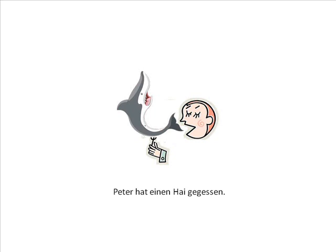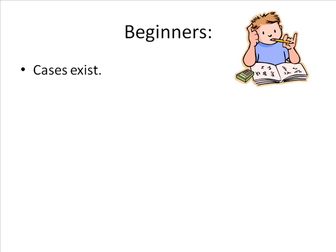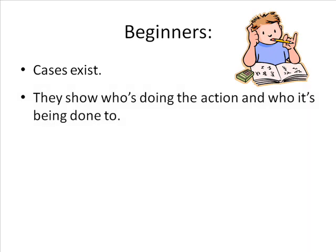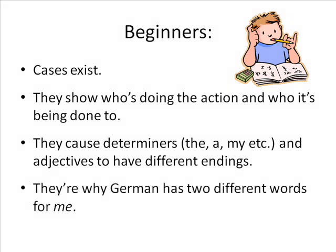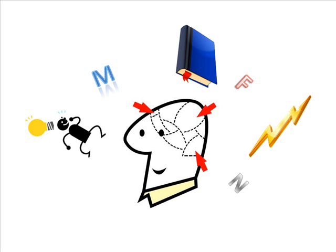When you first start learning German, the chances are that all the sentences you come across will be in the same order that an English one would be — the person or thing doing the action first, the person or thing the action is done to second. At this point, it's mainly important to know that the cases exist and know what they are for, rather than being able to use them correctly. This explains why determiners and adjectives can have so many different forms, and explains why there are two different words for 'me.' So I would advise not worrying too much about trying to use the correct case in your sentence until you've been learning for a while.